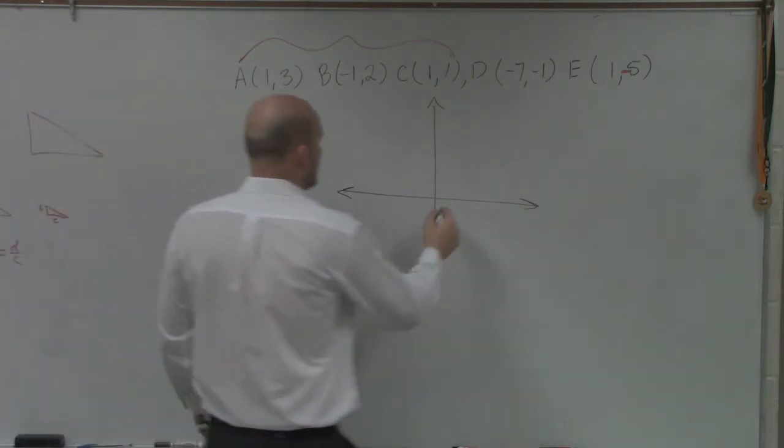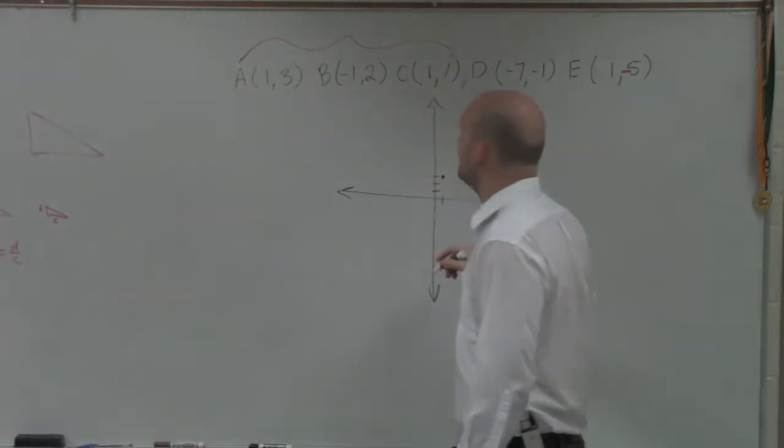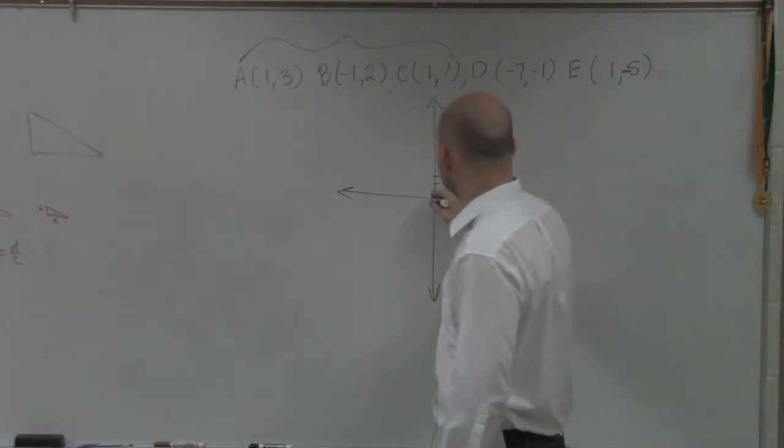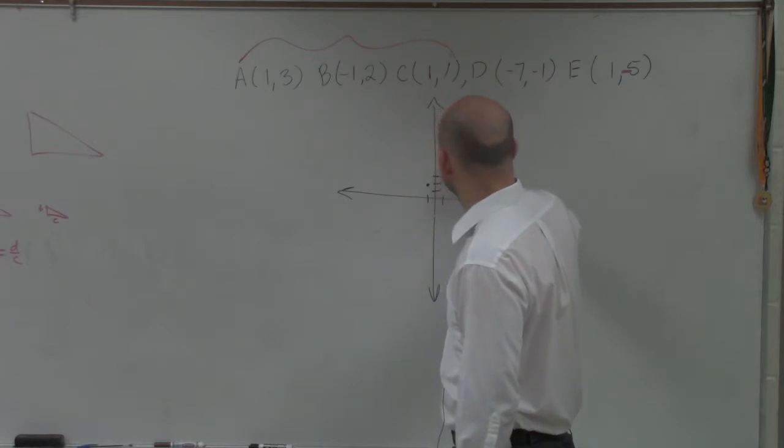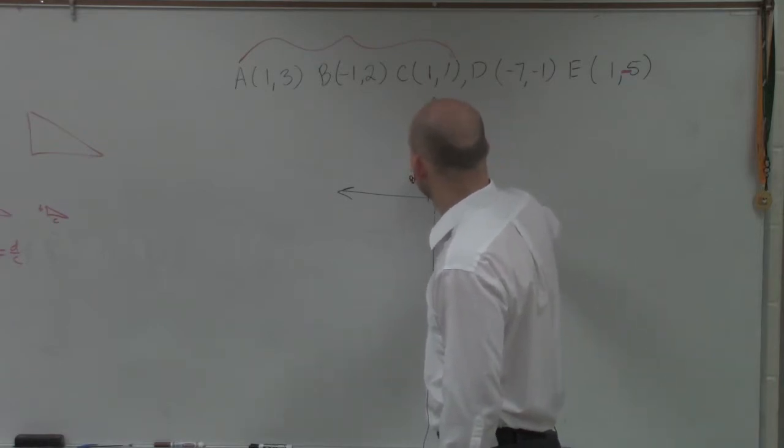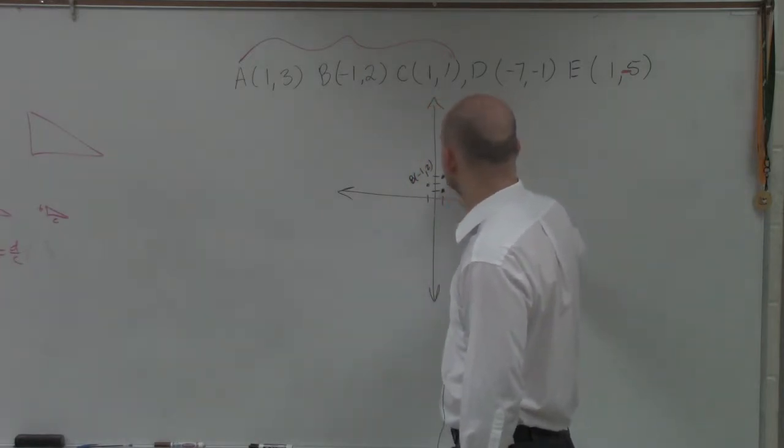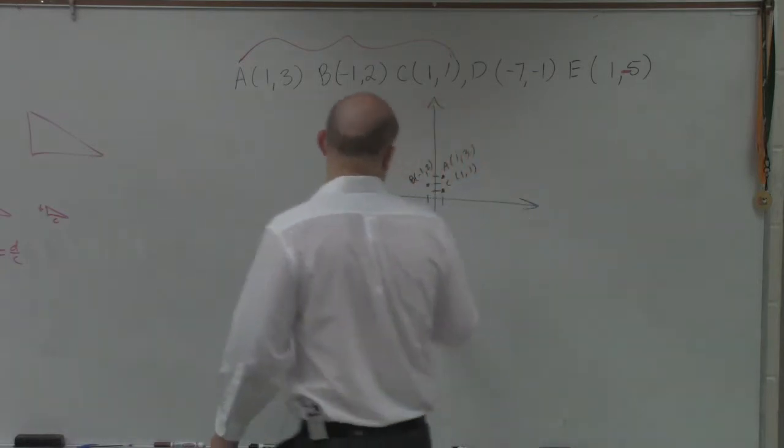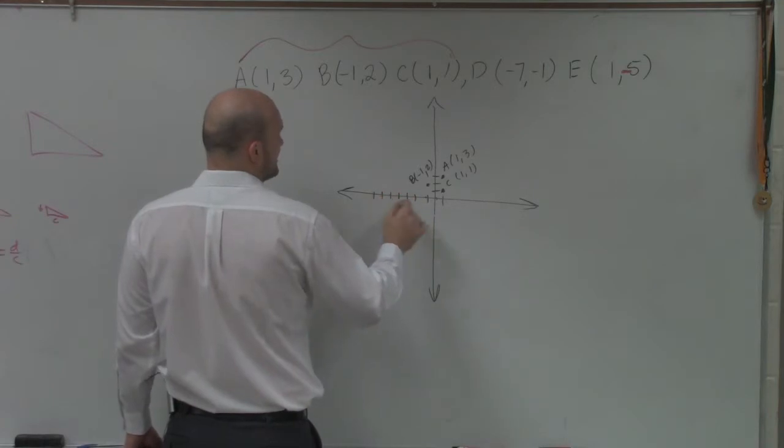So to go ahead and set this up, I'm going to have 1, 1, 2, 3. B, which is we had negative 1, 2. So I'm going to label this A, which is 1, 3. B, which is negative 1, 2. C, which is 1, 1. D, which is negative 7, 1. So 1, 2, 3, 4, 5, 6, 7. Negative 1.